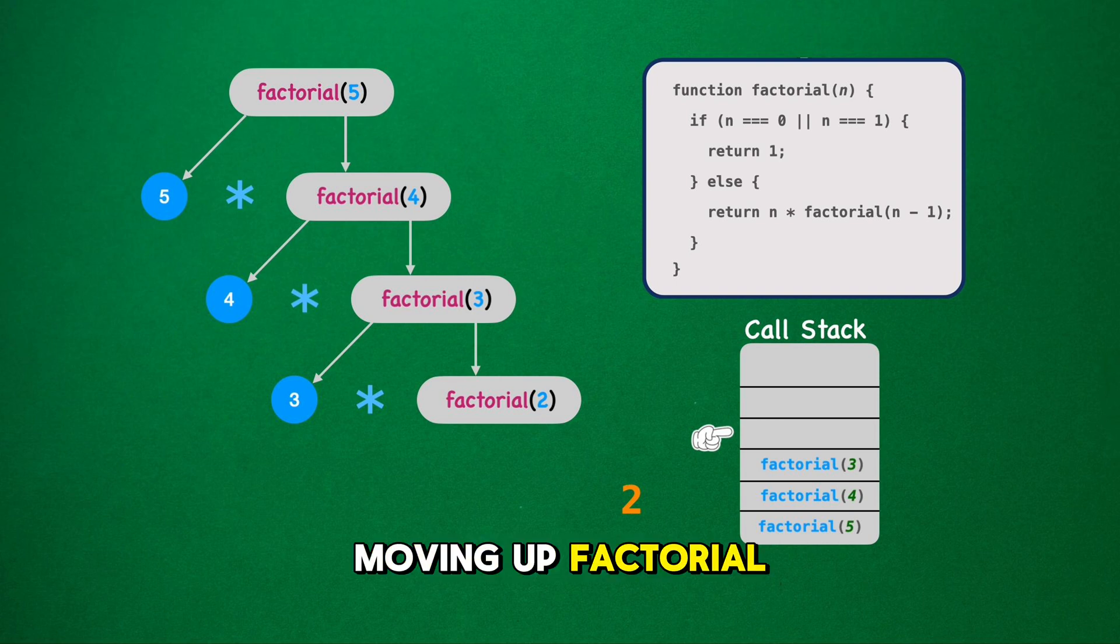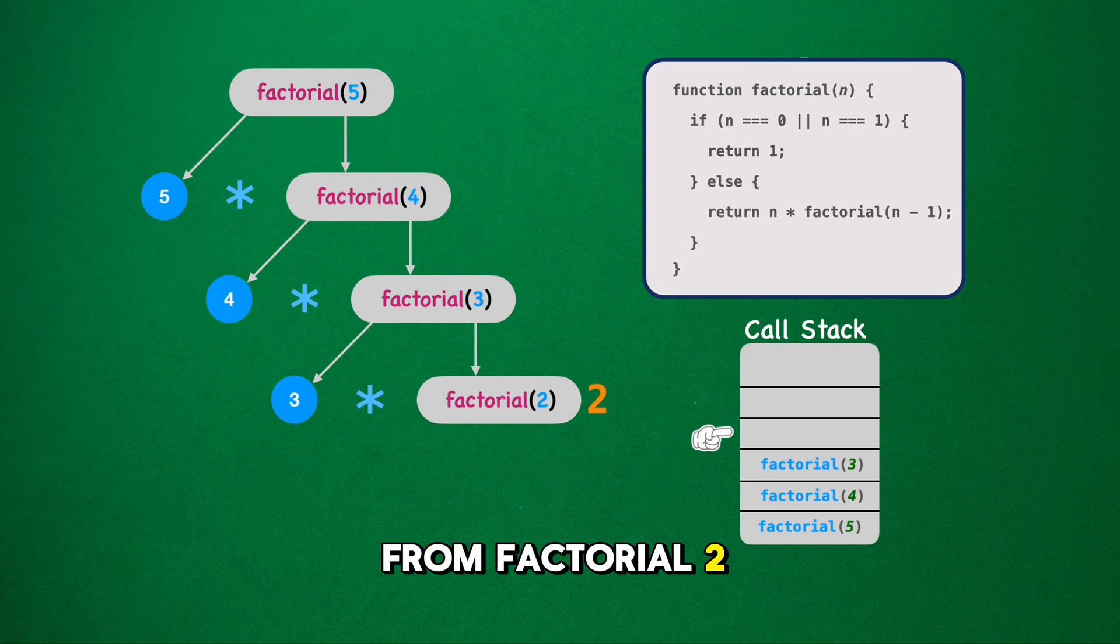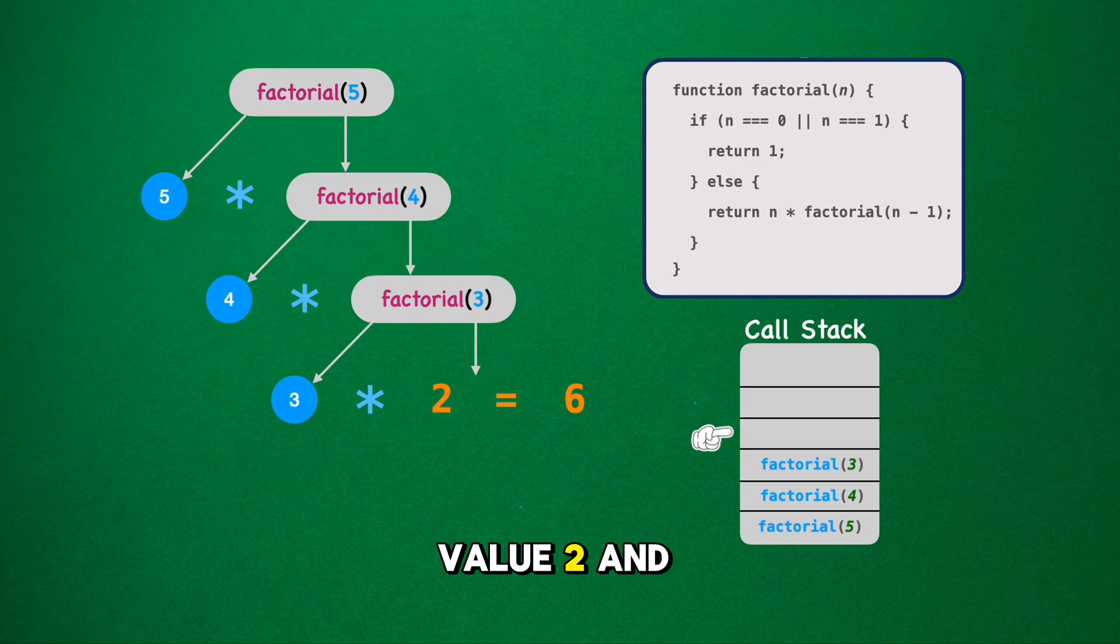Moving up, factorial 3 was waiting for the result from factorial 2. We replace factorial 2 with its value, 2, and get 3 asterisk 2, which gives us 6.